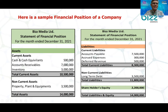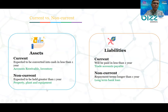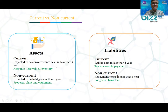The typical way is to categorize assets as current and non-current, and liabilities as current and non-current, along with shareholders' equity. Current assets are expected to be converted into cash in less than one year, such as accounts receivable and inventory. Non-current assets are expected to be held for greater than one year.